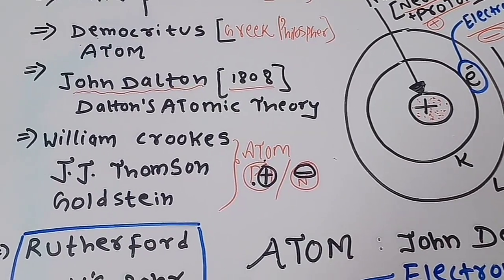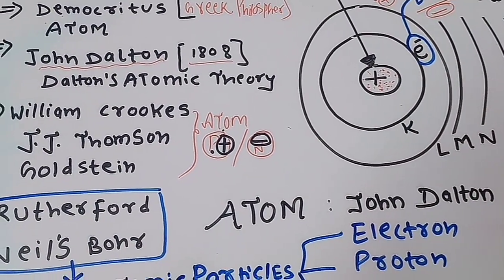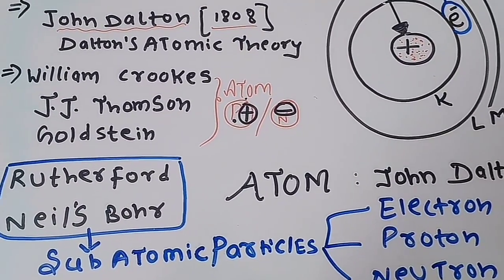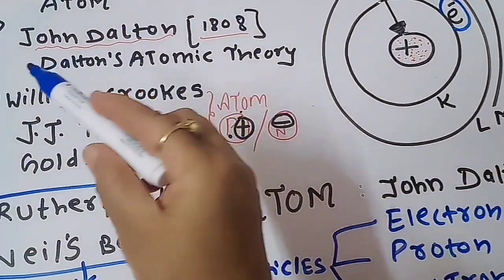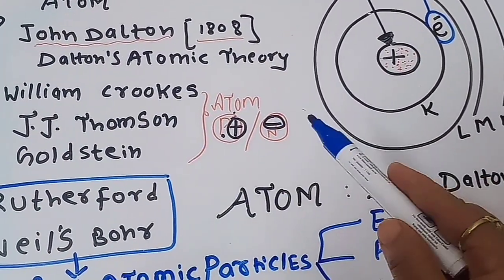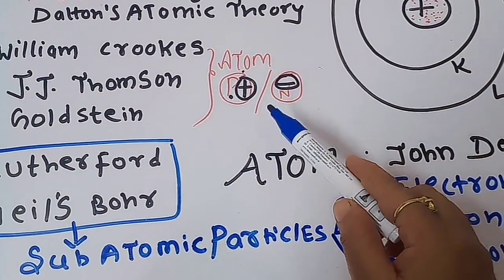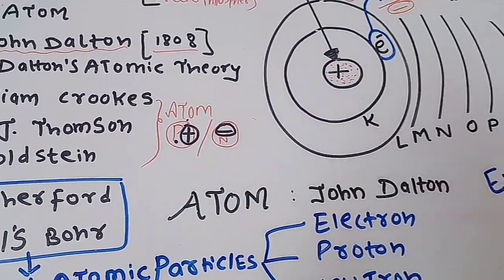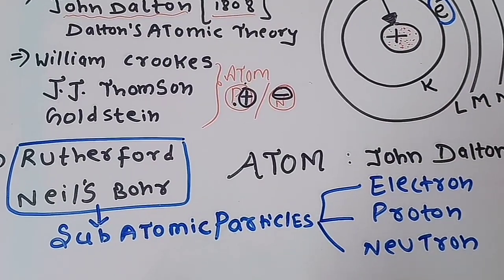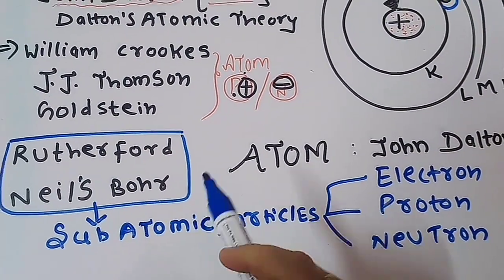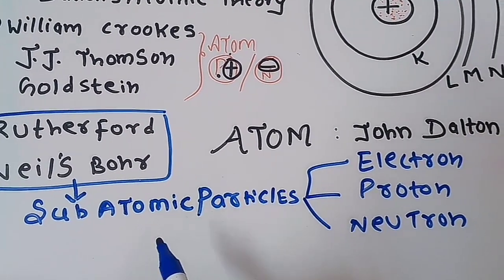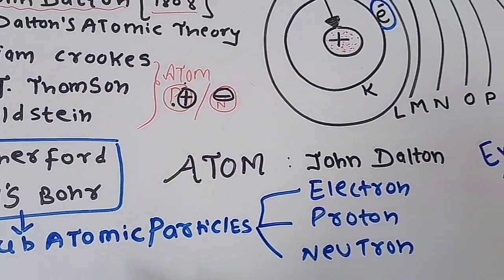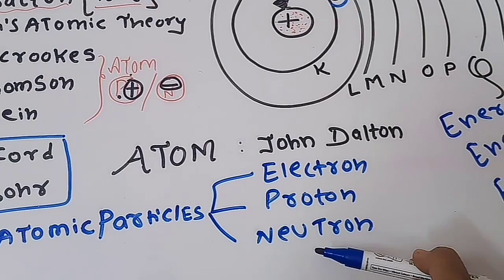John Dalton, in his Dalton's atomic theory, explained the atom, but he said it is indivisible. As research continued, William Crookes, J.J. Thomson, and Goldstein's experiments revealed that the atom is made up of either positively charged particles (protons) or negatively charged particles. Then Rutherford and Niels Bohr's experiments proved that the atom is made up of subatomic particles like electrons, protons, and neutrons.